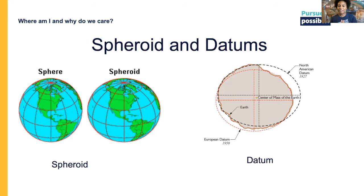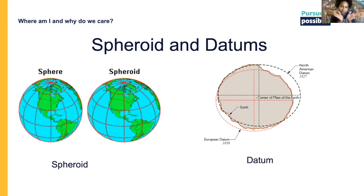Regarding why Greenwich was chosen — it's because it's on the Thames and was a good starting point for the British Empire's seagoing navigation when this all began. It wasn't a geographically magical point — there's no weird gravitational pull. They had a reason for their own organizational or empire-building purposes.